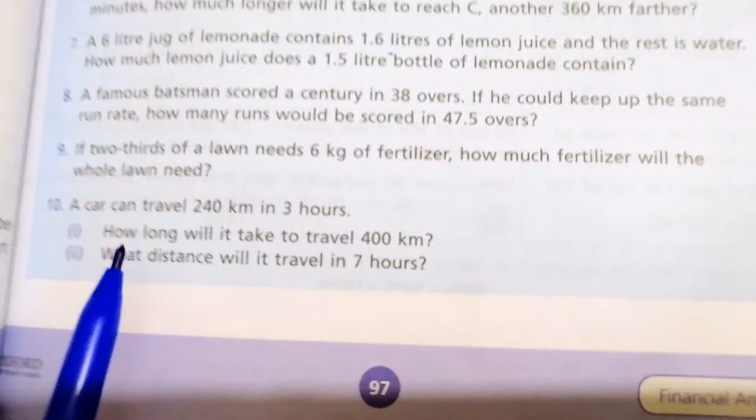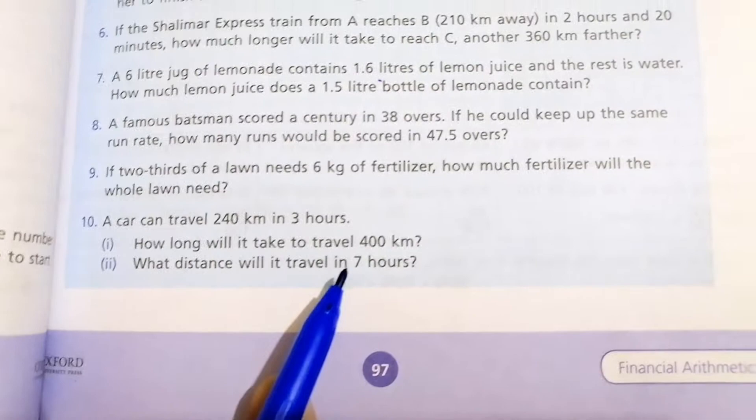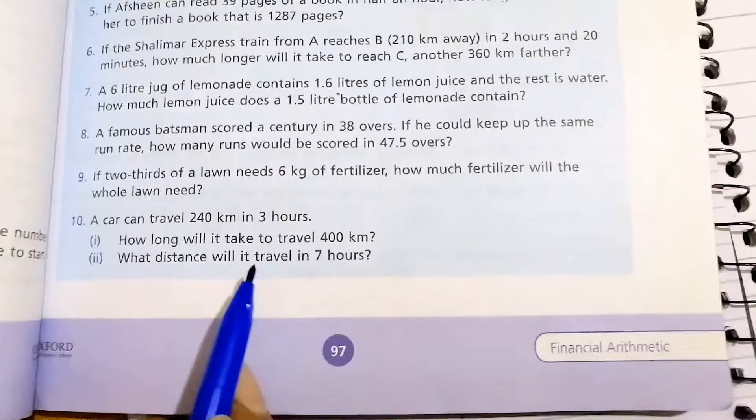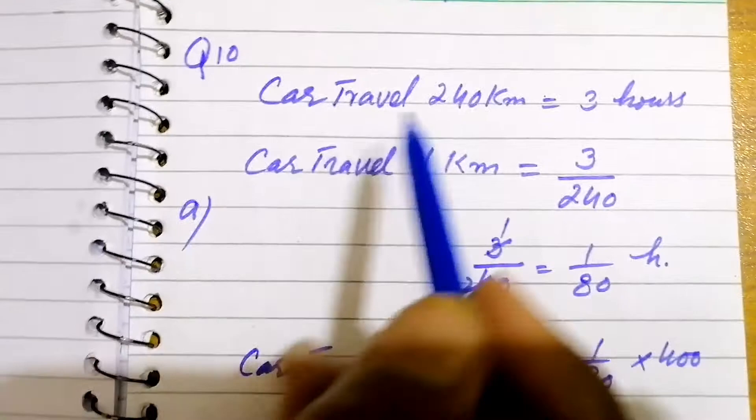Question number 10: a car travels 240 kilometers in 3 hours. How long will it take to travel 400 kilometers? 240 kilometers it covers in 3 hours, and how much time it will take to cover 400? Car travels 240 kilometers, that is equal to 3 hours, so it takes 3 hours.